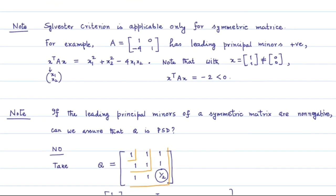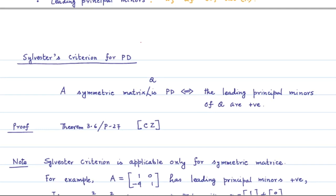Sylvester's criterion is also applicable for Hermitian matrices, i.e., complex matrices Q satisfying Qᴴ = Q. This criterion is named after the English mathematician James Joseph Sylvester — 'Sylvester' being the surname his older brother adopted upon immigration to the United States, which required immigrants to have a given name, a middle name, and a surname. So it would be more appropriate to call this 'James Joseph's condition.'